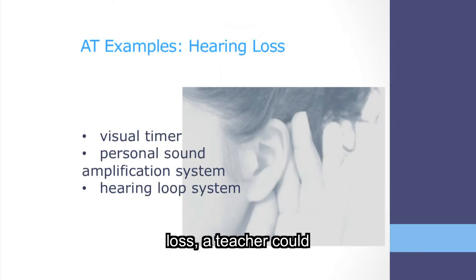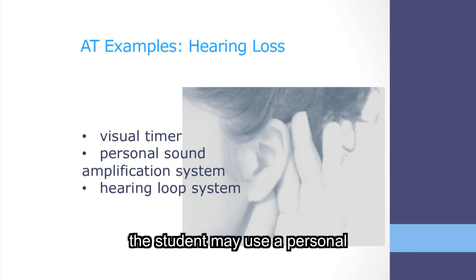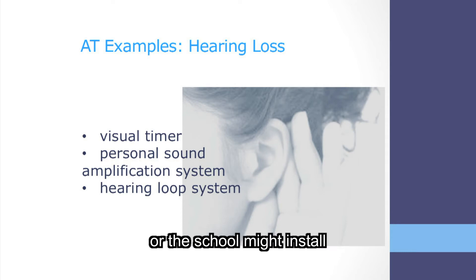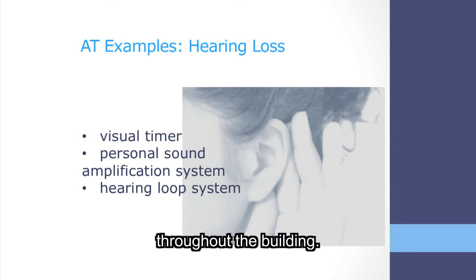For a student with hearing loss, a teacher could incorporate a visual timer. The student may use a personal sound magnification system, or the school might install a hearing loop throughout the building.